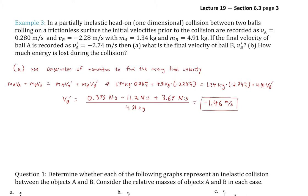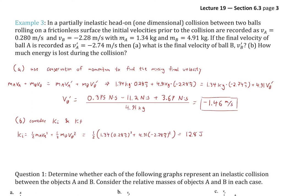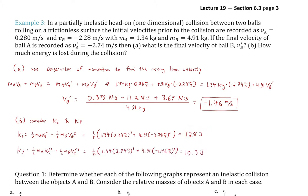Then we find how much energy is lost. We calculate initial kinetic energy: 12.8 J. Then calculate final kinetic energy for both objects: 10.3 J. The difference is 2.6 J — that's the magnitude of energy lost in this partially inelastic collision.